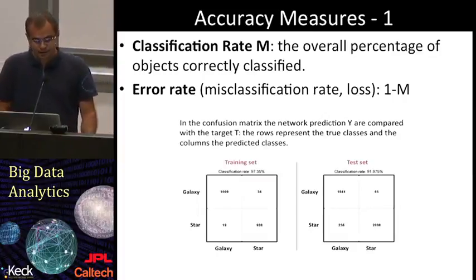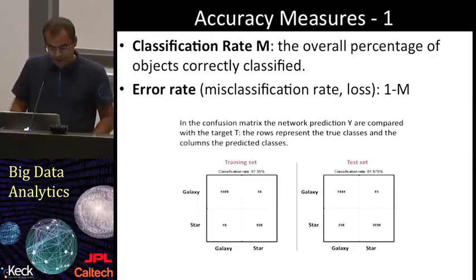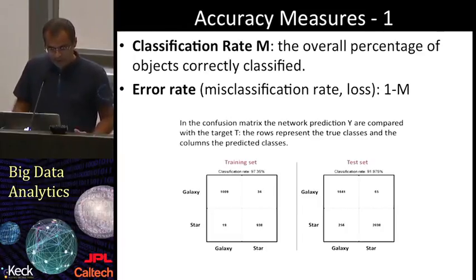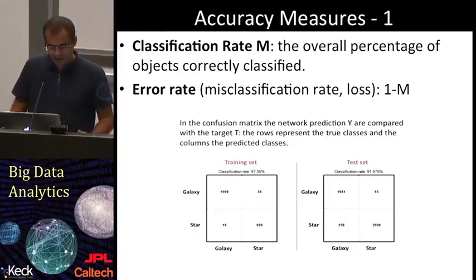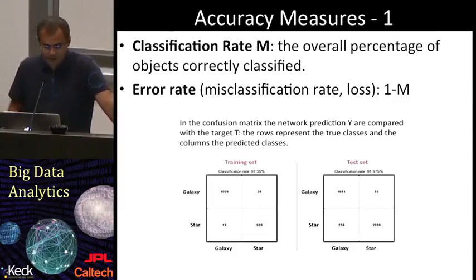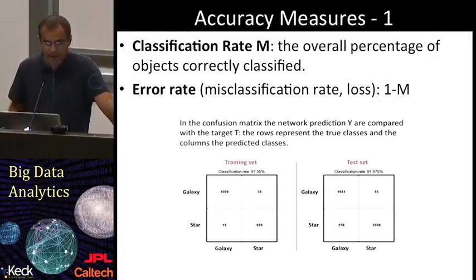Now let's talk more in detail about accuracy measures. Accuracy is better estimated on an independent test set in order to avoid over-optimistic estimates due to overfitting. We can define the classification rate as the overall percentage of objects correctly classified, and the misclassification rate or loss is simply one minus the classification rate. The confusion matrix is really helpful in visualizing how good the classification is, even class by class.